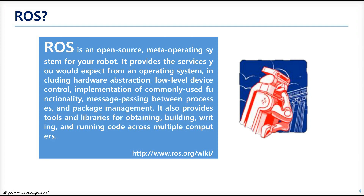This description is written on the ROS Wiki. It says ROS is open source. As you saw in the previous chapter, there were many named companies that were fascinated by ROS open source. ROS is a meta operating system for your robot — meaning it is like an operating system, but not an operating system.